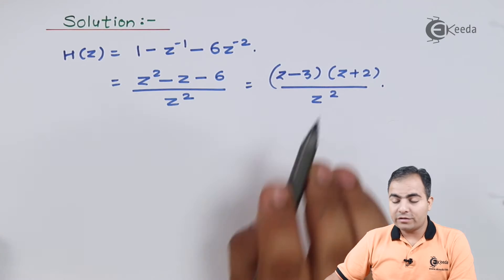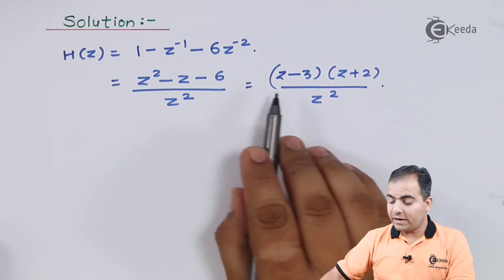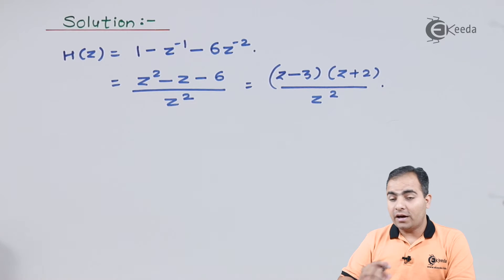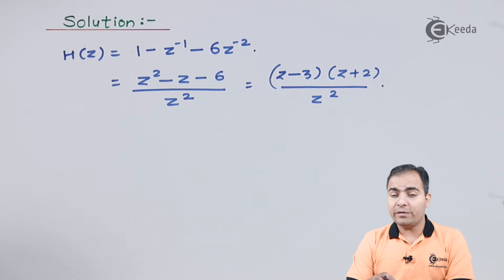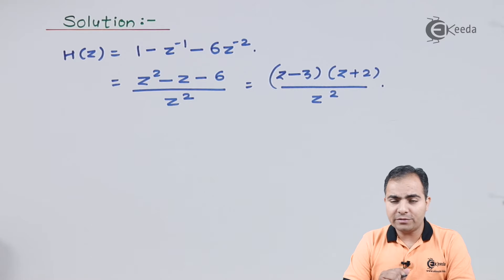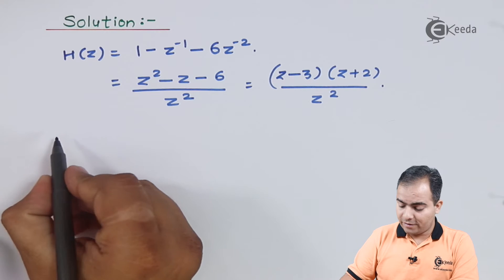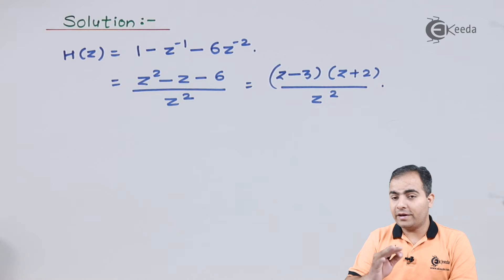We will calculate the location of zeros. How to find out the location? Just equate each factor with respect to zero. We have two zeros.